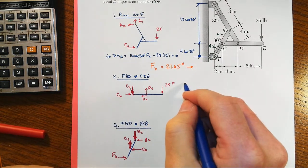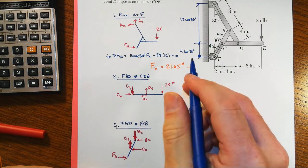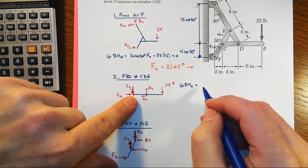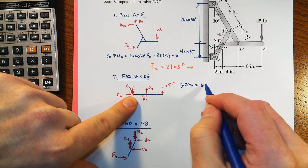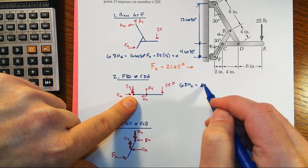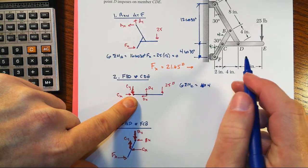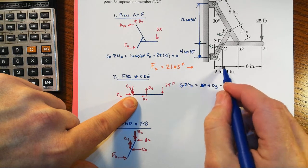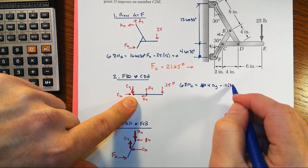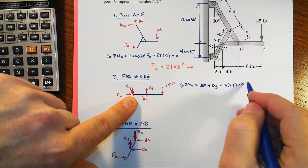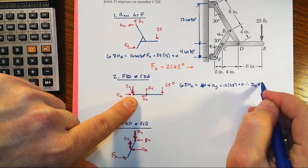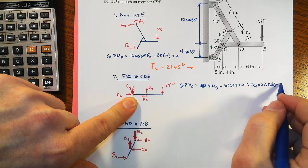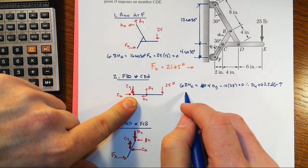Come back to CDE, and we can sum moments about point C. Let's take counterclockwise as positive. We'll have then 4 times DY, then minus a total of 10 times the 25, set it equal to zero. Therefore, DY equals 62.5 pounds acting going up on that member. That's one of the things we want to find.